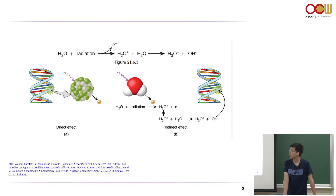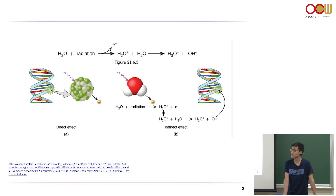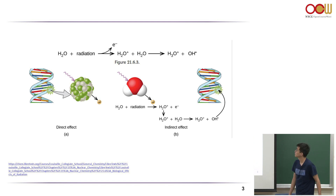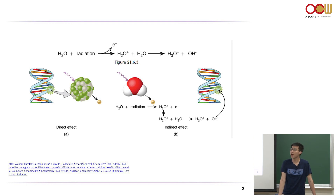This image details what happens when you're exposed to radiation. In the form of high energy radiation, it can cause ejection of electrons from water. Remember, on the oxygen there are some lone pairs — if you remember how to draw the Lewis structure of a water molecule. So you get this ionized water, and it can react with another water molecule to generate hydroxyl radical.